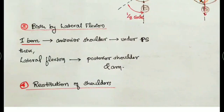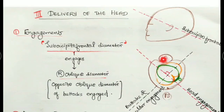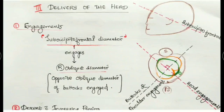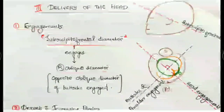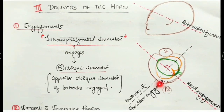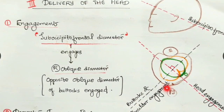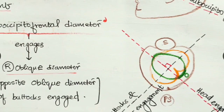The only part remaining inside the maternal pelvis is the head - and it is risky; we have to take it out as soon as possible as there is a high chance of birth asphyxia. Coming to delivery of the head: the engagement diameter is the suboccipital-frontal diameter, and this diameter engages in just the opposite diameter to that of the shoulders and buttocks.